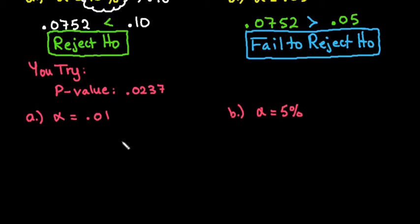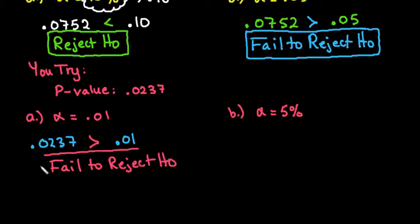All right so to compare your answer to mine let's look at our values. We're comparing our p-value 0.0237 to our alpha 0.01. So if we look at this 0.0237 is greater than 0.01 and anytime it is greater than that means that we are going to fail to reject the null hypothesis. So if you made the decision to fail to reject then you made the correct decision.